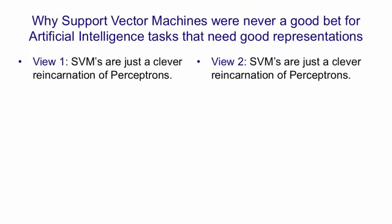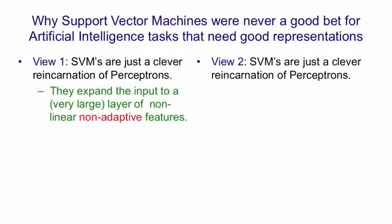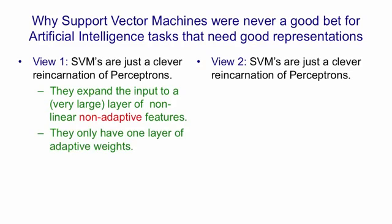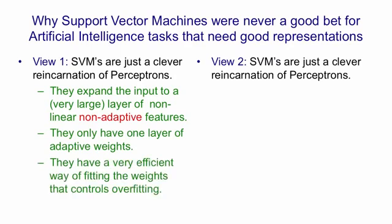I want to talk briefly about support vector machines — not how they work, but what I think their limitations are. According to the first view, support vector machines are just a reincarnation of perceptrons with a clever trick called the kernel trick. You take the inputs and expand the raw input into a very large layer of non-linear but non-adaptive features — just like perceptrons, where you have a big layer of features that doesn't learn. Then you only have to learn one layer of adaptive weights, the weights from the features to the decision unit. Support vector machines have a very clever way of avoiding overfitting when learning those weights, by finding a maximum margin hyperplane in a high-dimensional space.